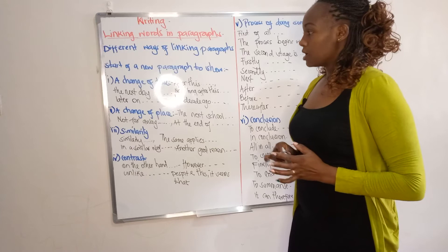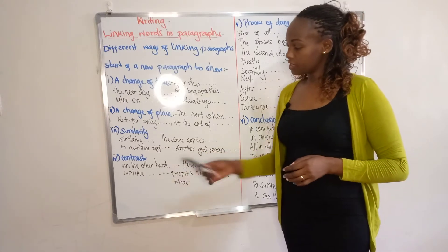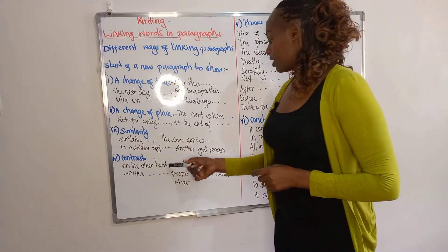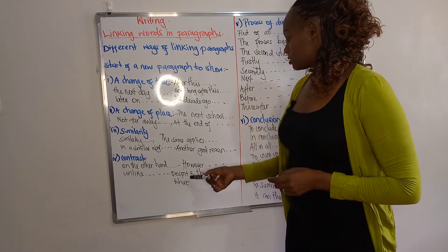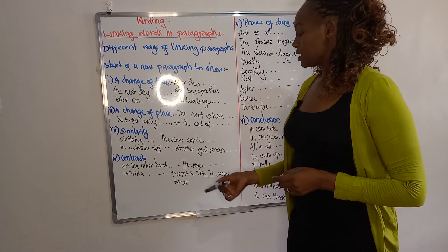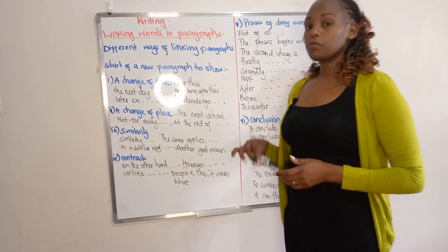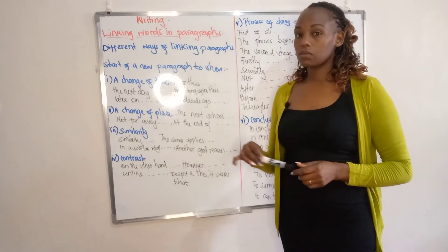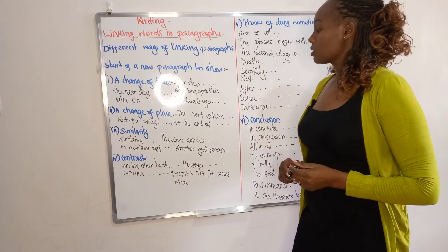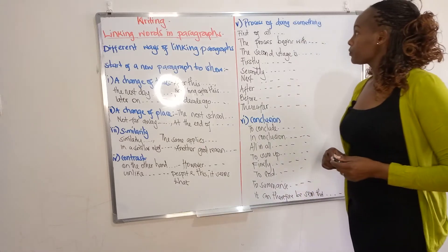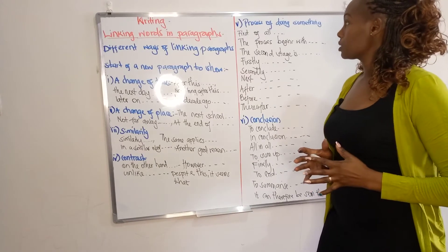When we want to show contrast at the start of a new paragraph, the following linking words may be used: 'on the other hand,' 'however,' 'unlike,' 'despite this,' 'it seems that.' These are linking words that show contrast. Maybe in the previous paragraph you were talking about a different thing and now you want to contrast it — you may use these linking words.